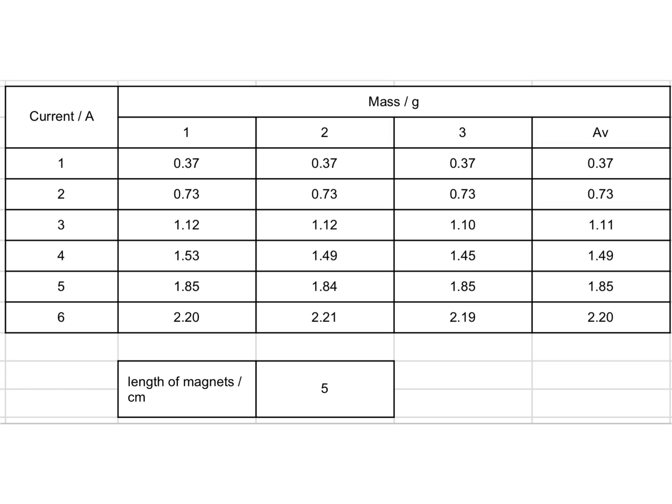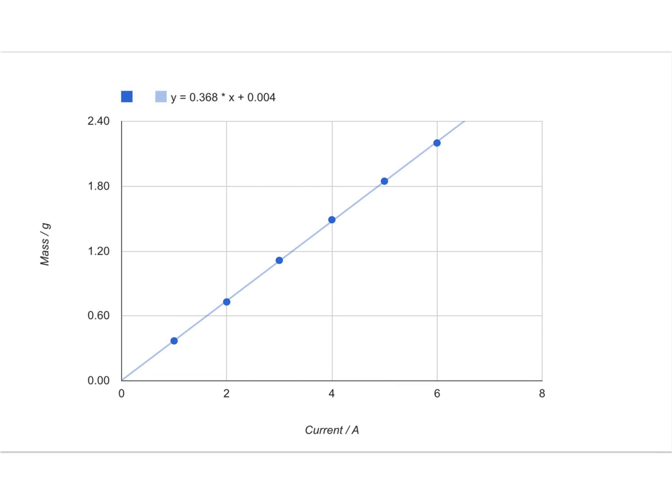Okay. So, here are my results that I took. I've got the current from one to six amps. I've got the mass measured in grams with my averages and the length of the magnets at five centimeters. So, you might want to press pause and copy those results down but they will give rise to when you plot them a very accurate graph that looks